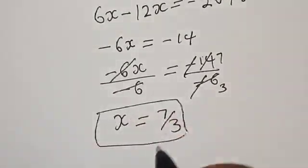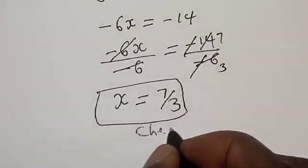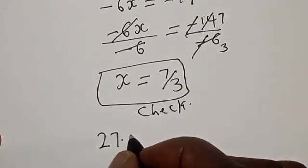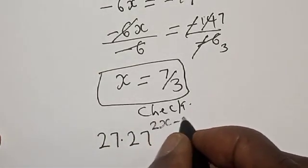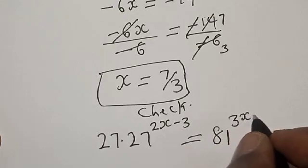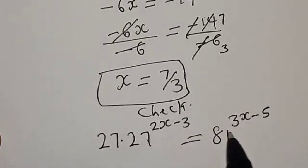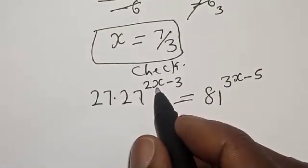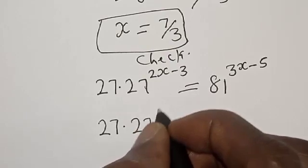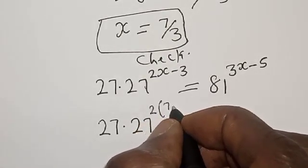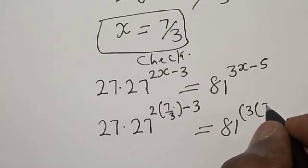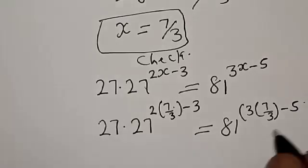Let's check. We have the given equation: 27 multiplied by 27 raised to the power 2x minus 3 must be equal to 81 raised to the power 3x minus 5. The left hand side must equal the right hand side. Substituting x equal to 7 over 3, this is 27 multiplied by 27 raised to the power 2 into 7 over 3 minus 3, must be equal to 81 raised to the power 3 into 7 over 3 minus 5.